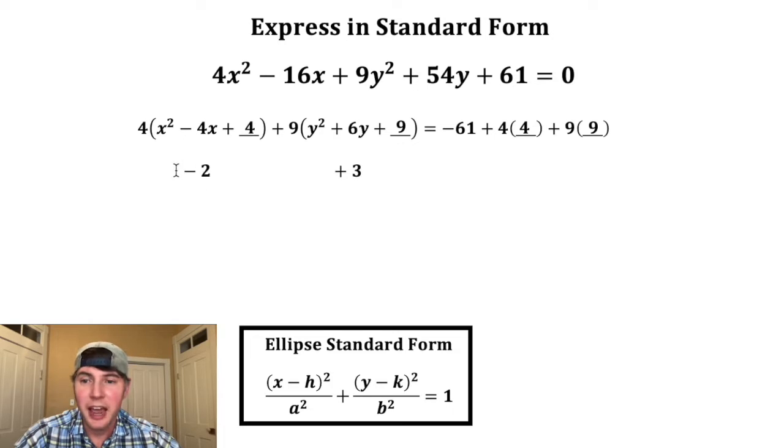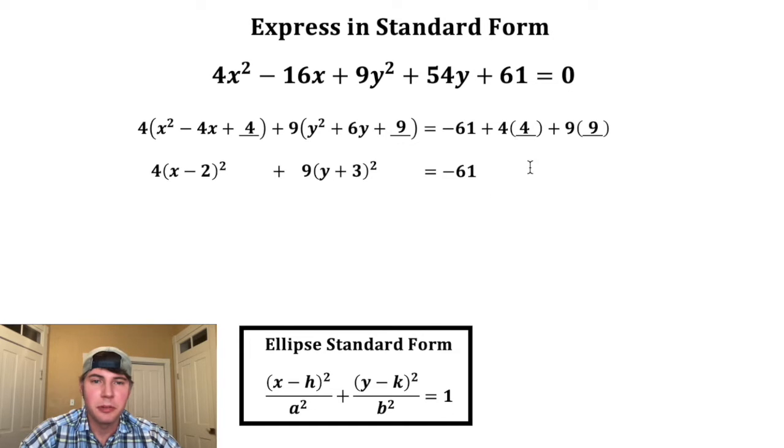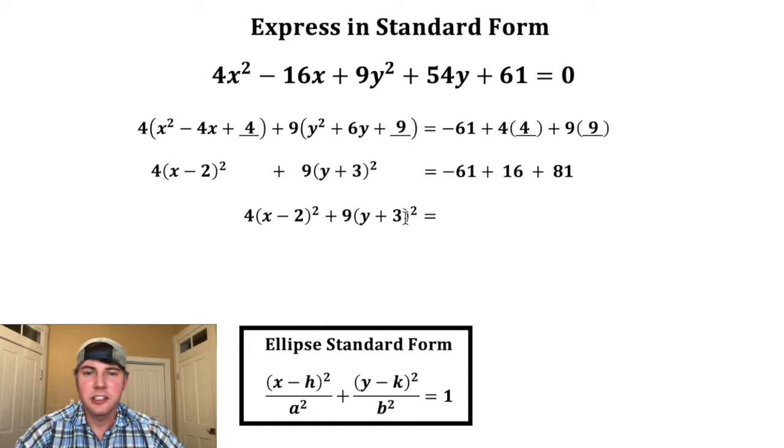The reason I wrote the half number down here is because that is the perfect square. x minus two squared is the same thing as this right here. And same thing for this one. The reason I brought the three down is because this is the perfect square. This will all be equal to the negative 61 plus 16 plus 81. Let's smush this all together. And on the right-hand side, these all add up to 36.